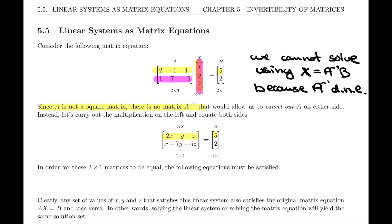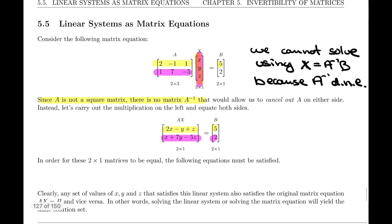And the same way, we have the second row, first column, but that is x plus 7y minus 5z, and that's what we wrote here, and that has to equal 2.